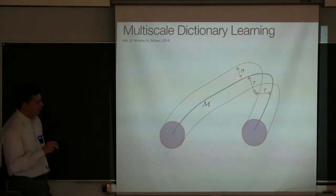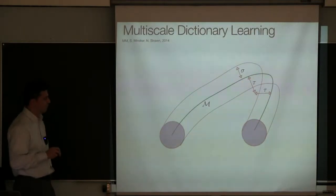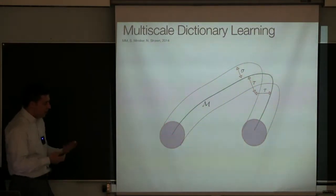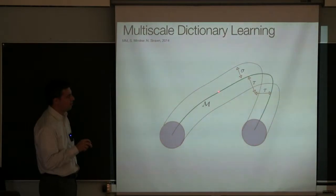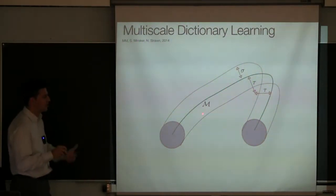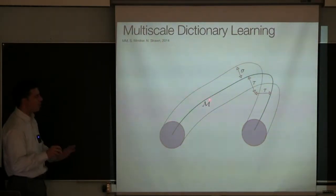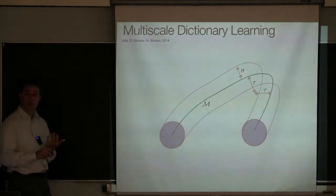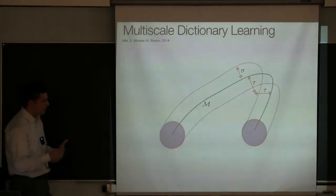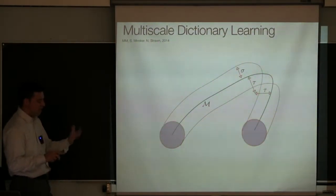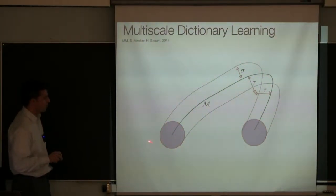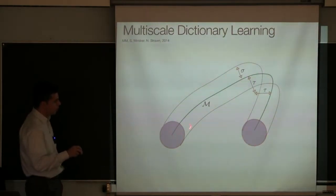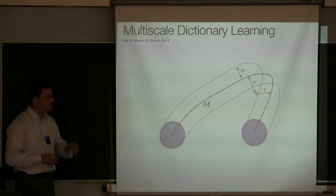Sometimes the data does lie on a low-dimensional set as nice as a manifold — sometimes it does not. Maybe the data would lie on a low-dimensional manifold if it were perfectly clean with no noise, but then there is noise that pushes it out — that's the setup I described when discussing multi-scale SVD. Or perhaps the data is intrinsically low-dimensional but does not lie on a smooth manifold. So we relax the manifold assumption to include both noise and the case where there is no smooth manifold, by saying simply that the data lies in a tube of radius sigma around a low-dimensional manifold.